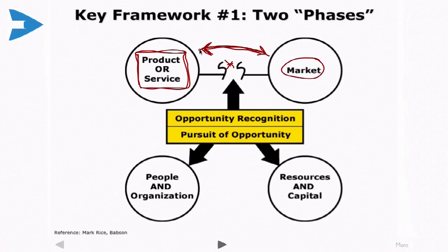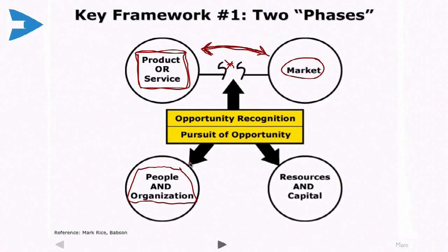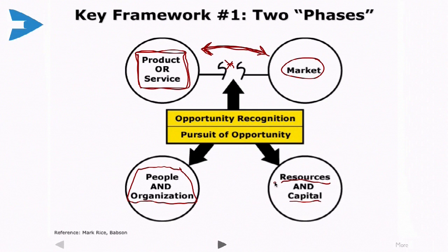The second step, once you've identified the opportunity, is the pursuit of opportunity. That's going to involve putting together the set of people — the co-founders and early hires — as well as the organizational structure that will enable you to pursue that opportunity. It's also going to require some resources and capital. The pursuit of opportunity involves raising financing and bringing together other resources, such as organizational partners or distribution channels. That's our first framework, representing the basic division in the class between the first and second halves of the course.